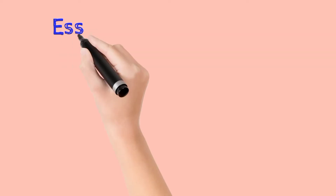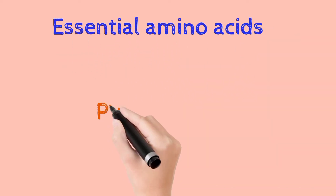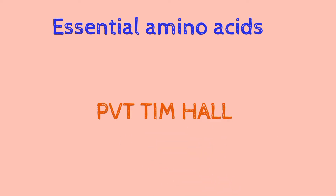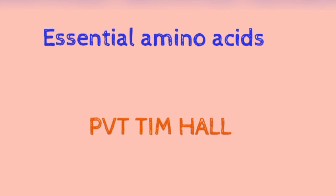Now let's begin with the mnemonics. First, for essential amino acids, there is the famous mnemonic PVT TIM HALL, which is used generally for essential amino acids. P stands for phenylalanine, V for valine, T for threonine, T for tryptophan, I for isoleucine, M for methionine, H for histidine, L for leucine, and L for lysine.